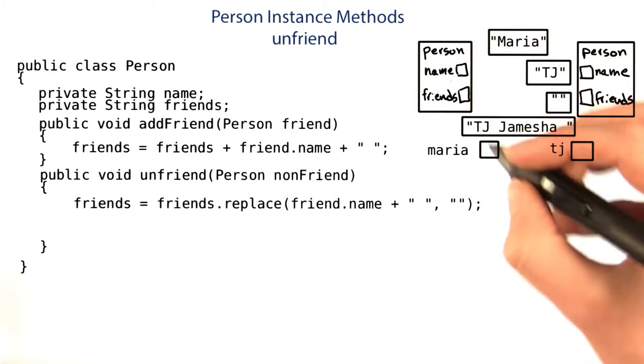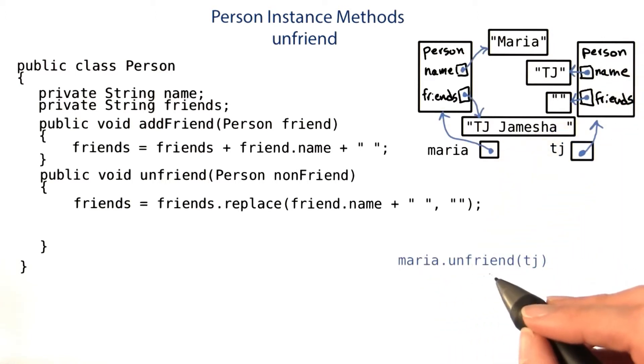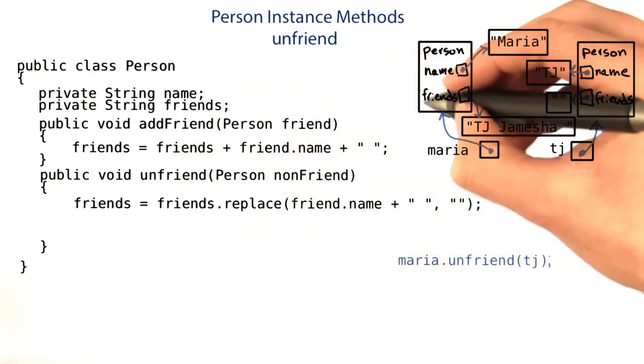So if this person is Maria, and this person is TJ, if we call Maria.unfriend TJ, we'll come into this method, and we'll be doing it for this object.